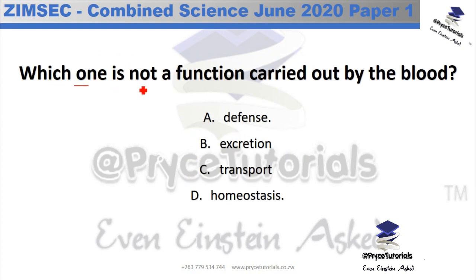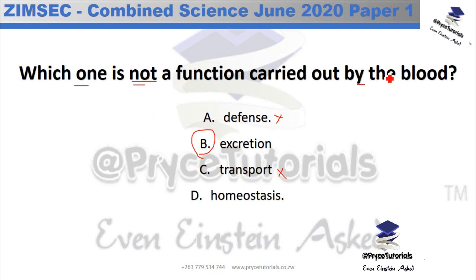The question asks which one is not a function carried out by the blood. Defense is a blood function — white blood cells are responsible for the body's defense. Excretion is not a function of the blood. Transport is a function — blood transports substances. Homeostasis is also a function through distribution of heat. So we take answer option B, excretion, which is not a function of the blood.